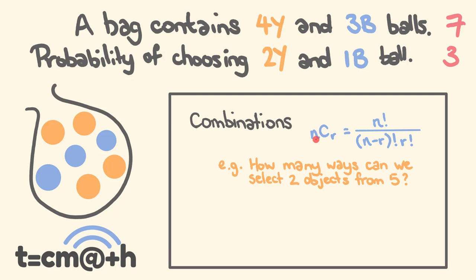Quick recap on combinations. Combinations — we're literally seeing how many different ways we can select r different objects from a total of n, from a bigger group. And it's this formula here, which really is not very scary at all once you get into it.